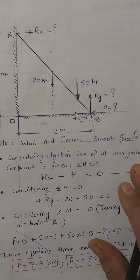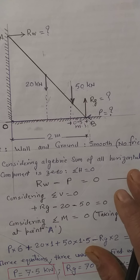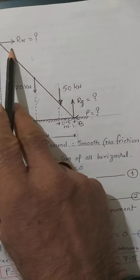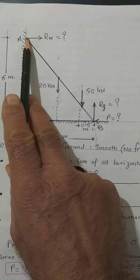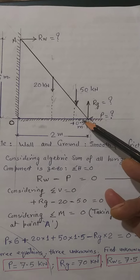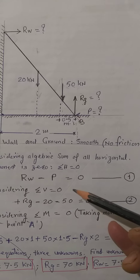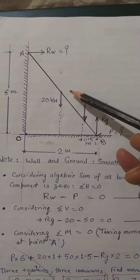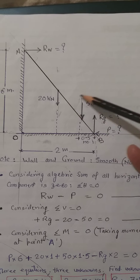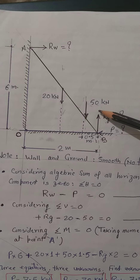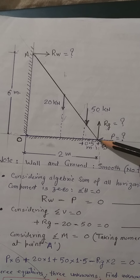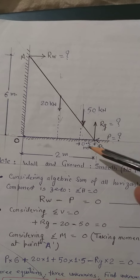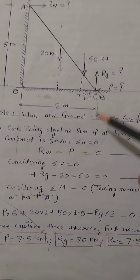First, let us consider sigma H equal to 0. There are only two horizontal forces acting in opposite directions. So we can say: plus Rw minus P equal to 0. This is equation number 1. Then for sigma V equal to 0, there are three forces — two acting downward and one acting upward. So: plus Rg minus 50 minus 20 equal to 0, and we can find out the value of Rg directly.